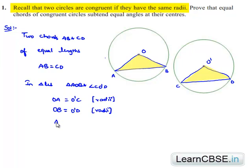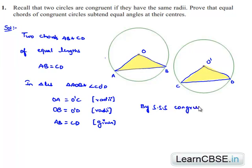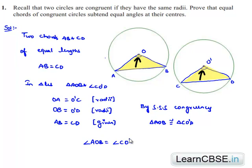Also, it is given that the chords are of equal length. Therefore, AB is equal to CD. Now, by the SSS property of congruency, we can say both the triangles are congruent — that is, triangle AOB is congruent to triangle CO'D. When two triangles are congruent, their corresponding angles are equal. Therefore, angle AOB is equal to angle CO'D.